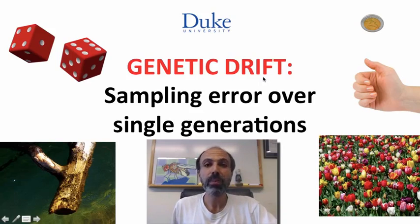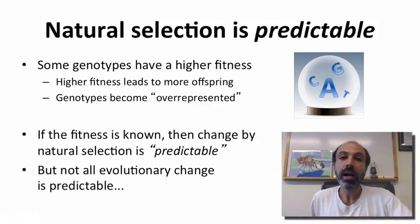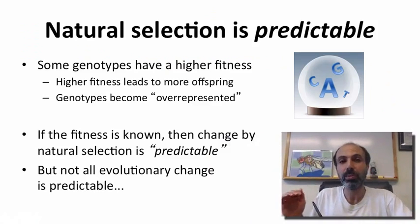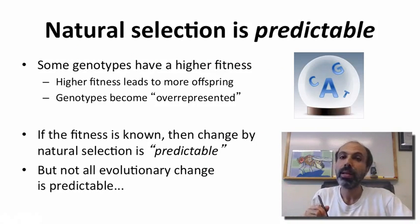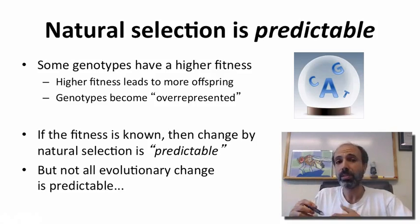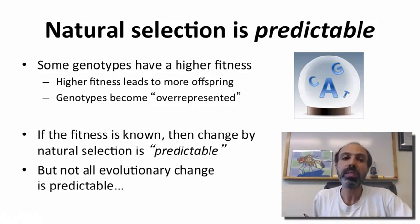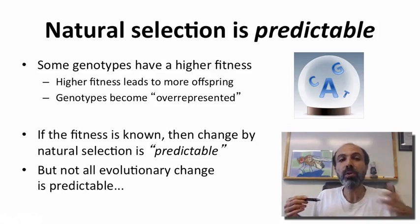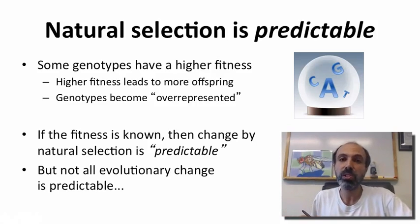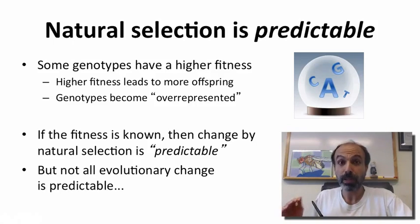In this video, we'll talk about the effects of sampling error over a single generation. Contrasting natural selection with genetic drift: natural selection is highly predictable. We have a subset of genotypes that have higher fitness than other genotypes. This higher fitness is associated with having more offspring, and as a result, these genotypes become overrepresented. If you know the fitnesses associated with the different genotypes, then the changes in allele frequency associated with natural selection are very highly predictable.